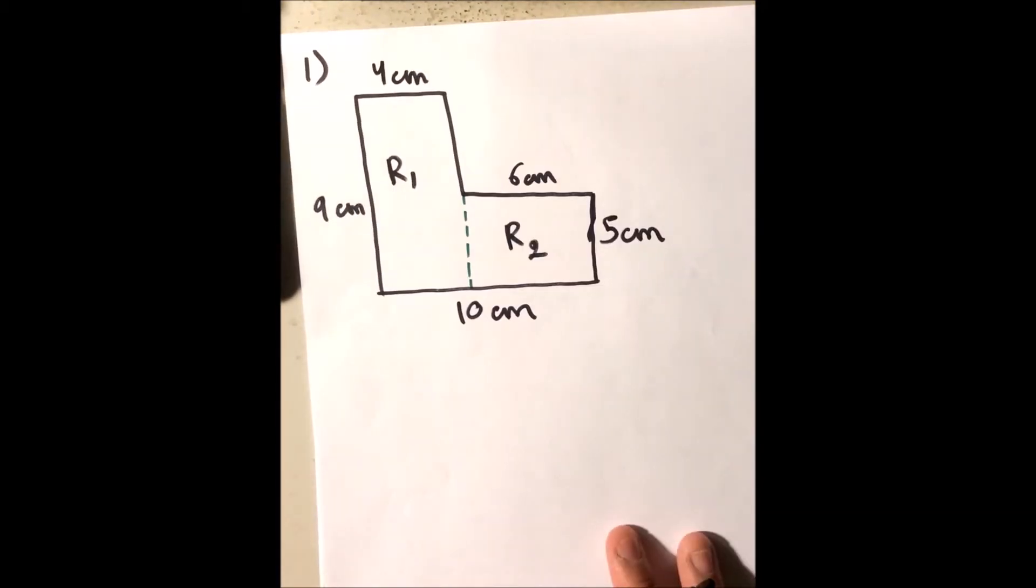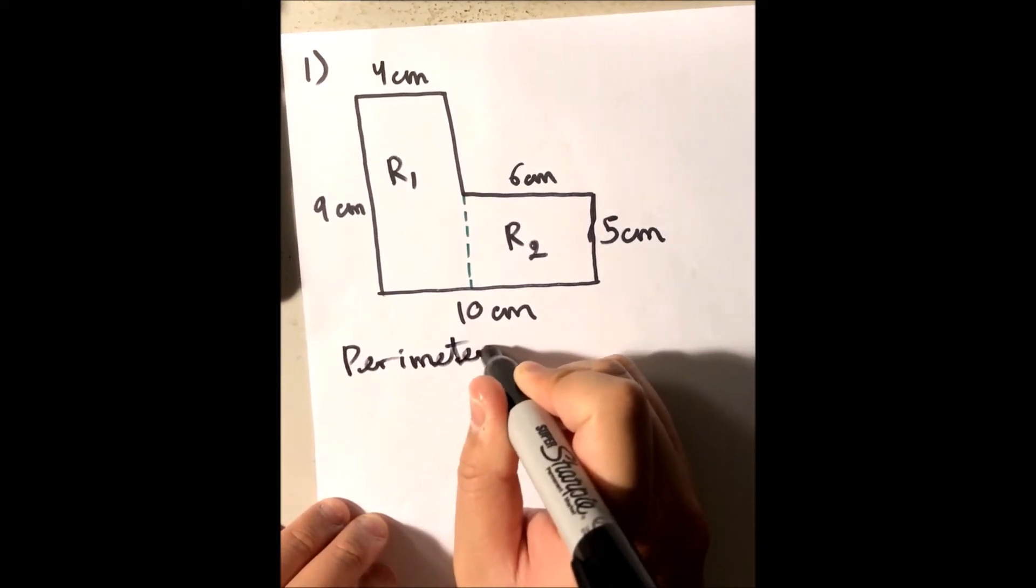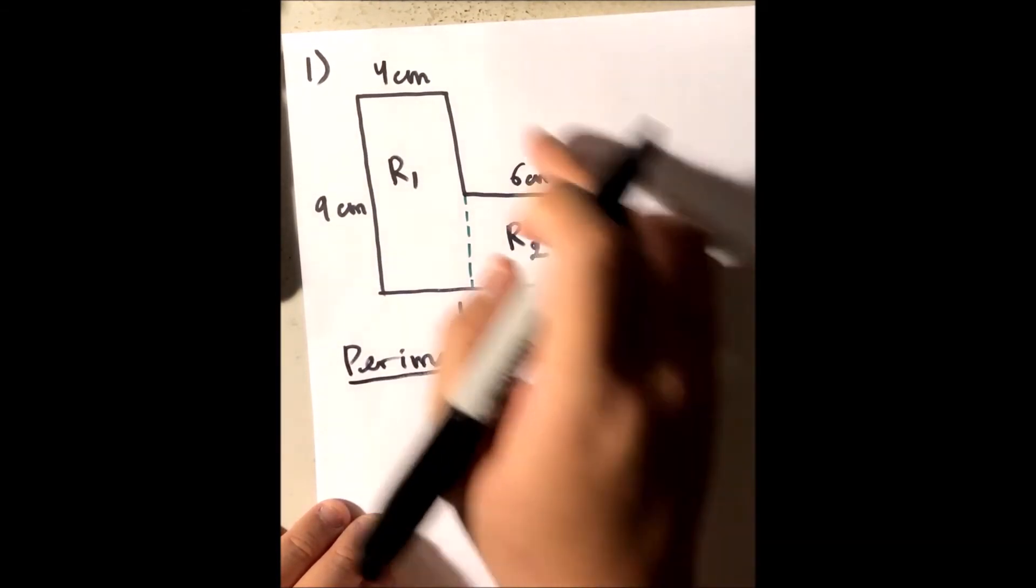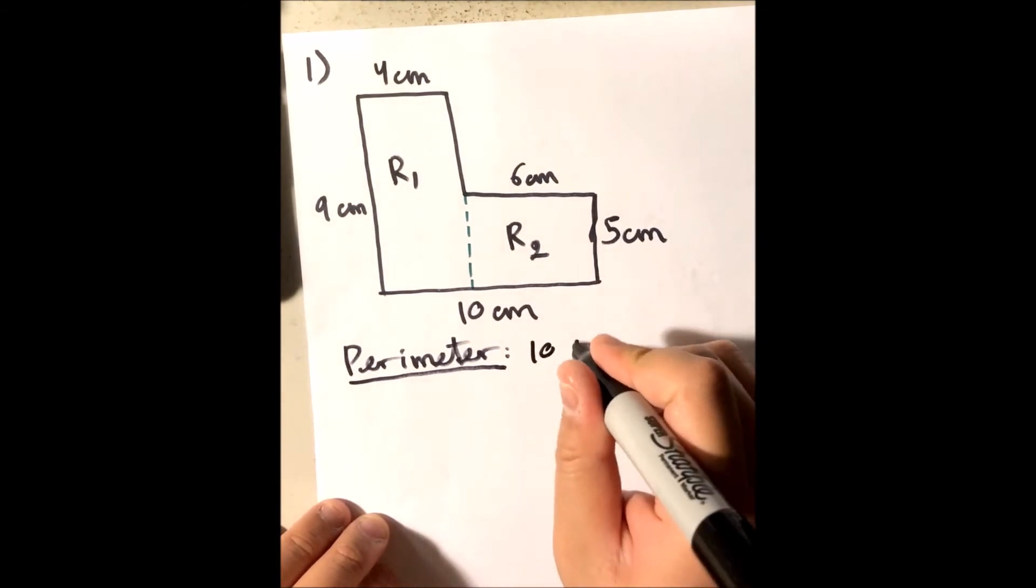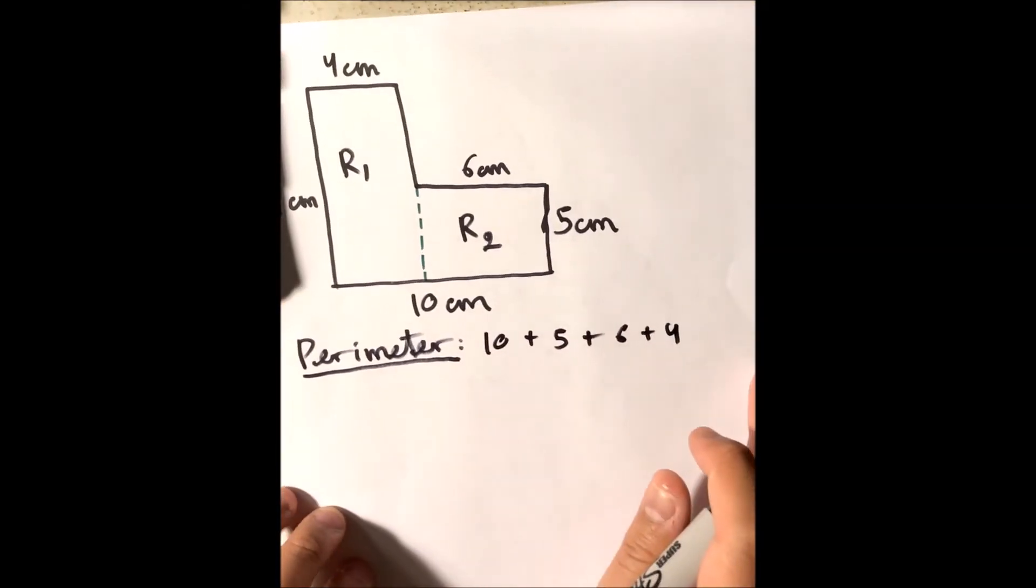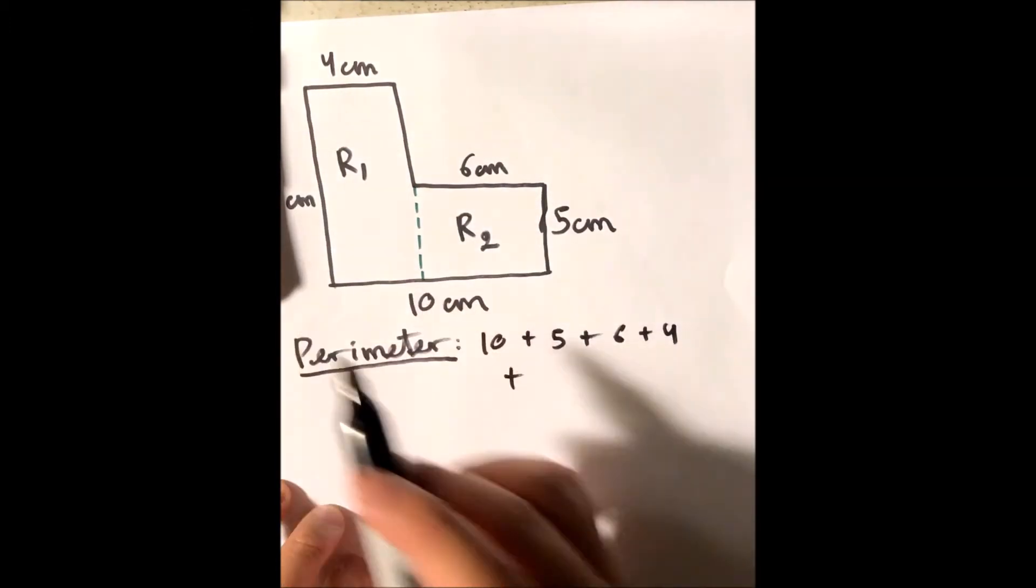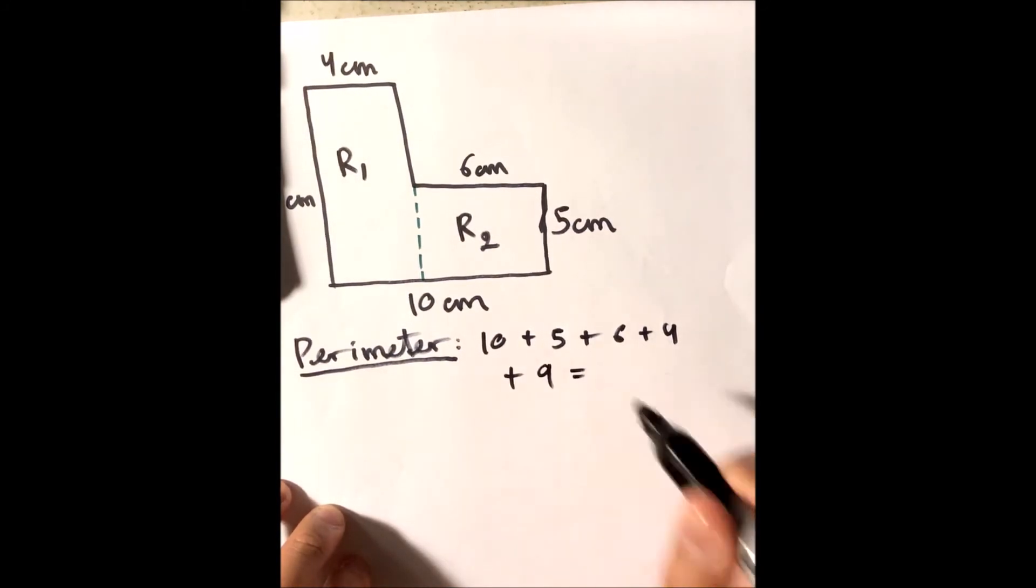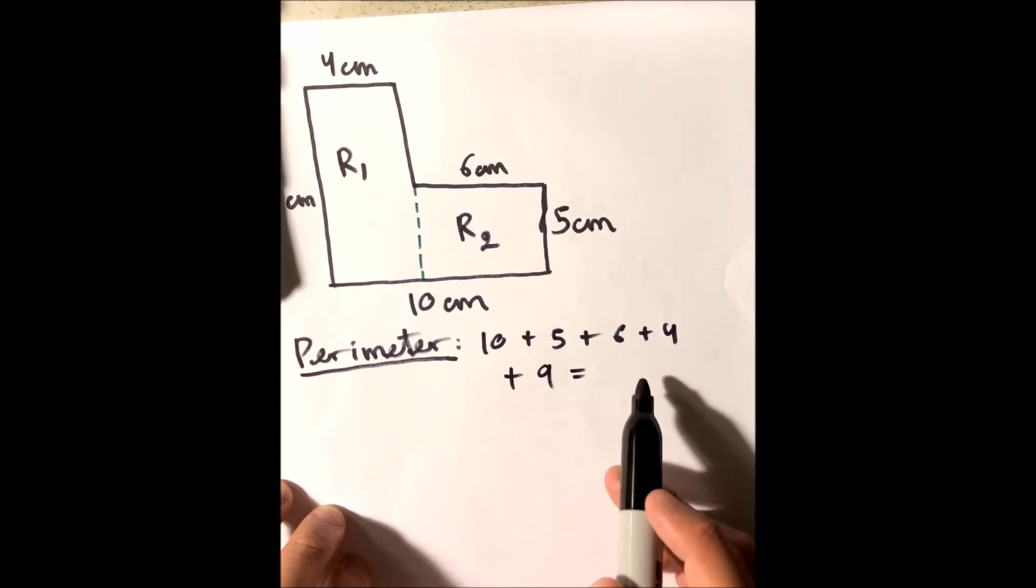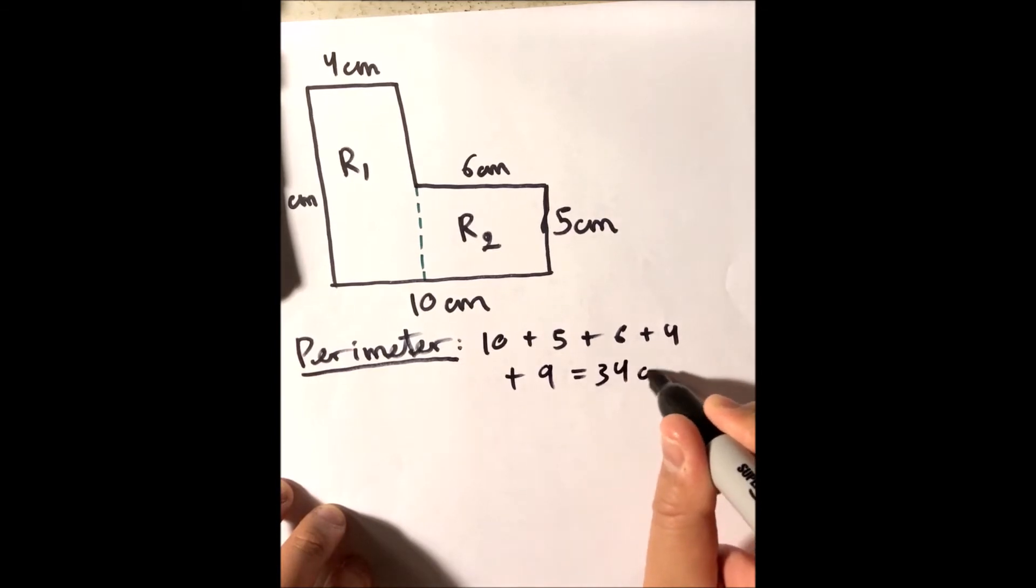Okay so the perimeter of this is just gonna be the sum of all of the sides. So 10 plus 5 plus 6 plus 4 plus 9. Let's see, 15 plus 6 is 21, plus 4 is 25, 25 plus 9 is gonna be 34. So this is 34 centimeters.